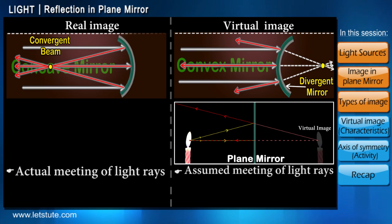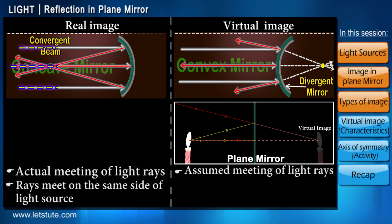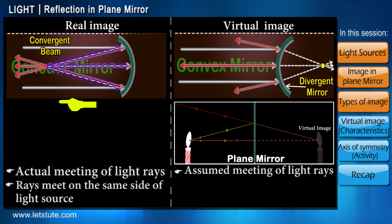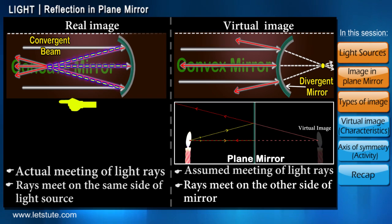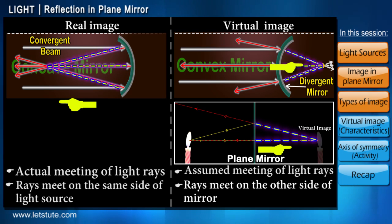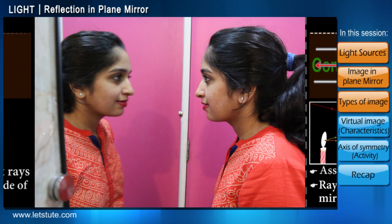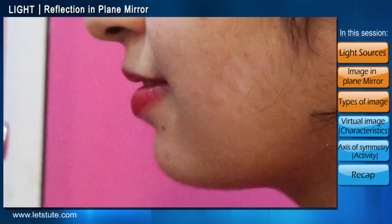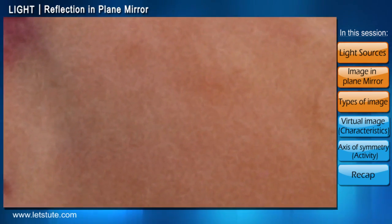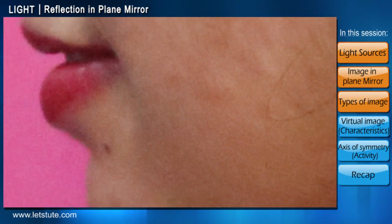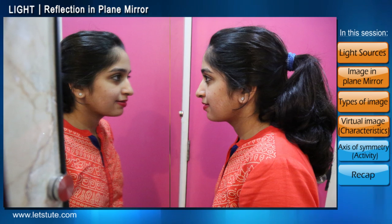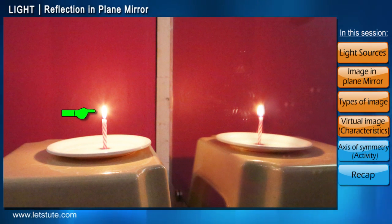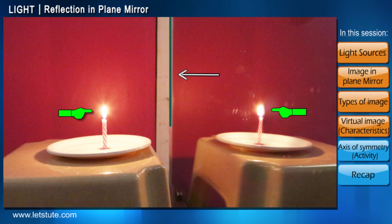Another thing to remember: in the case of a real image, the meeting of rays always occurs in the direction where reflection is happening, while in the case of a virtual image, the meeting occurs in the exact opposite direction. What we see when we look into the mirror is the summation of billions of point images formed from their corresponding points of our body.